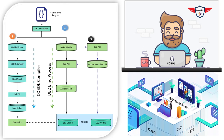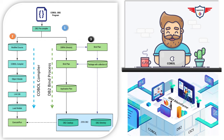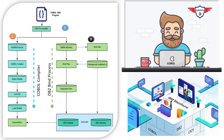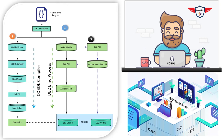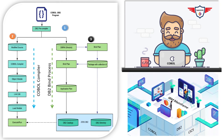DB2 allows two basic ways of binding a program: first to a package, and second directly to an application plan — but that depends on your project guidelines. Last but not least, the DBRM is kept as a member of a partitioned data set and is given the name of the program. It also contains a consistency token to distinguish it from other DBRMs derived from previous versions of the program.